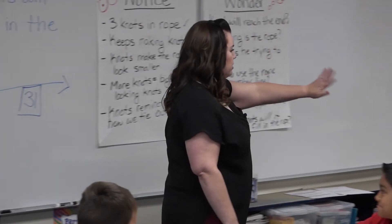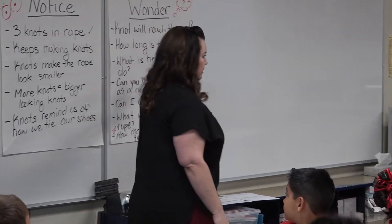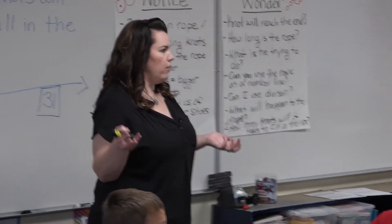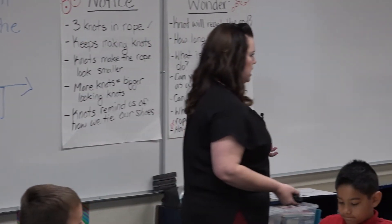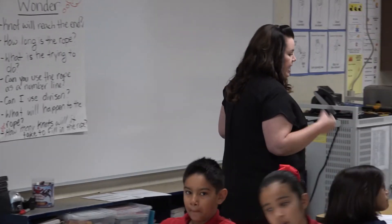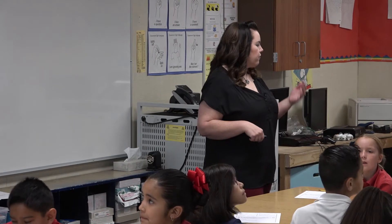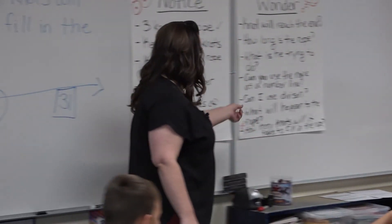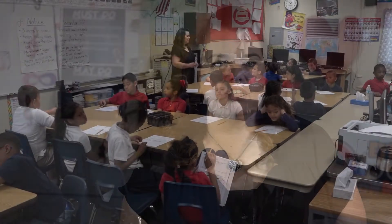From there we go to act two, which is known as the conflict or the productive struggle stage. This is where they start to problem solve. Before they start to problem solve, they have to make sure to ask me the correct questions to get more information about the act, because I have not revealed any mathematical statements or processes as of yet. So act two is: are we ready to solve? And what information do you need? I would like you to once again talk with your shoulder partner and think about any information that you might want from me to solve our problem of how many knots will fill in the rope. And once they pose the correct questions, I'm able to give them more information that they can then go and tackle the problem with.